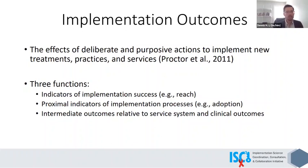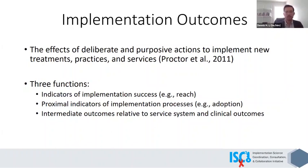Proctor further went on to define three functions of implementation outcomes. The first is as an indicator of implementation success — an example of that would be reach. A second function is that implementation outcomes are proximal indicators of implementation processes; an example of that might be adoption. And finally, implementation outcomes are an intermediate outcome relative to service system and clinical outcomes.